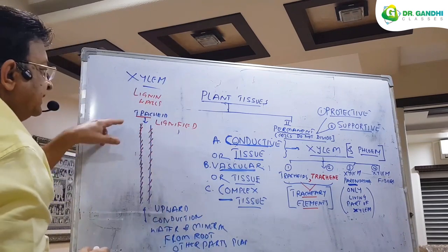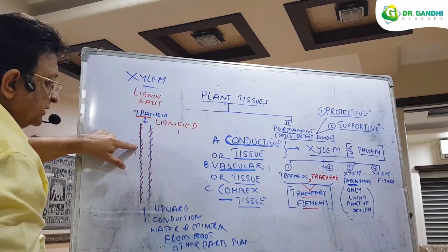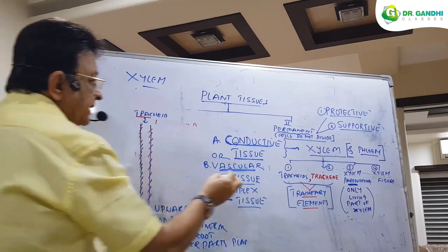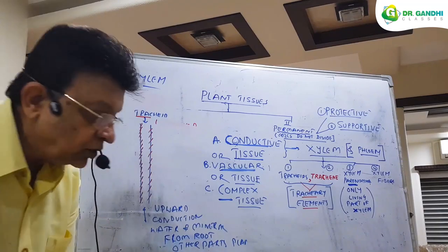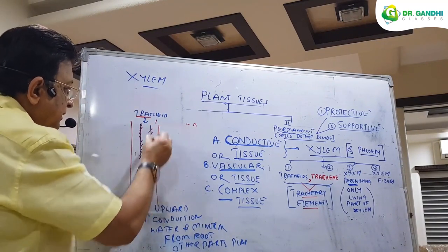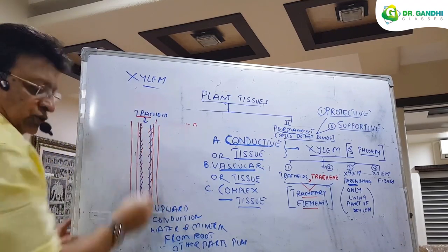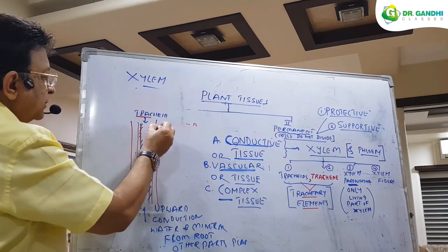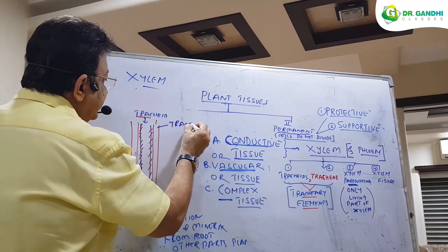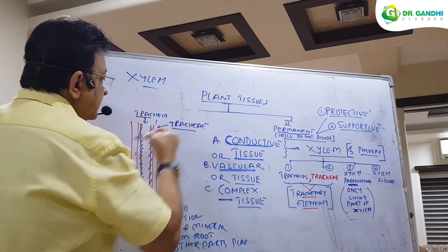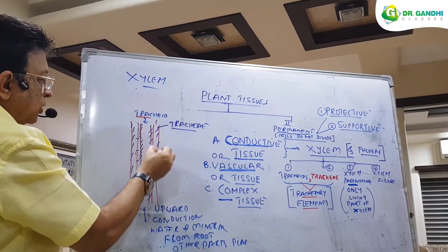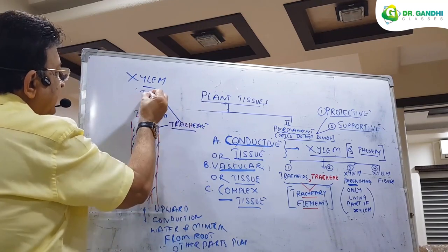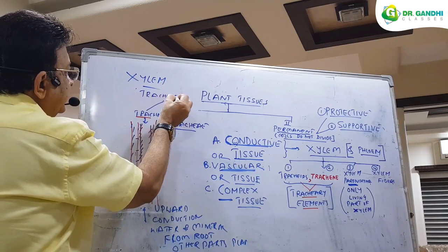The trachea are lignified — the lignin strengthens the wall. Next to it you have a vessel called tracheae. The tracheae also form a continuous tube for upward conduction of water from the root to other parts of the plant. Its walls are also lignified. Therefore the xylem, made up of trachea and tracheae, are collectively known as tracheary elements.